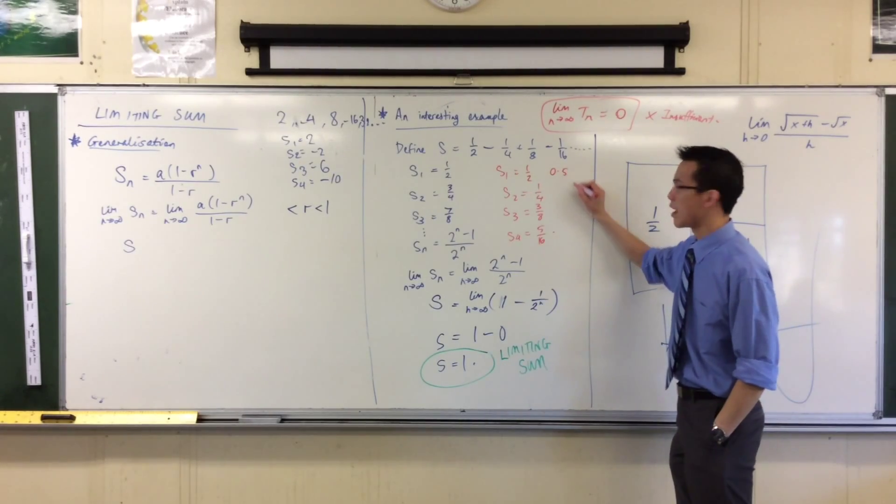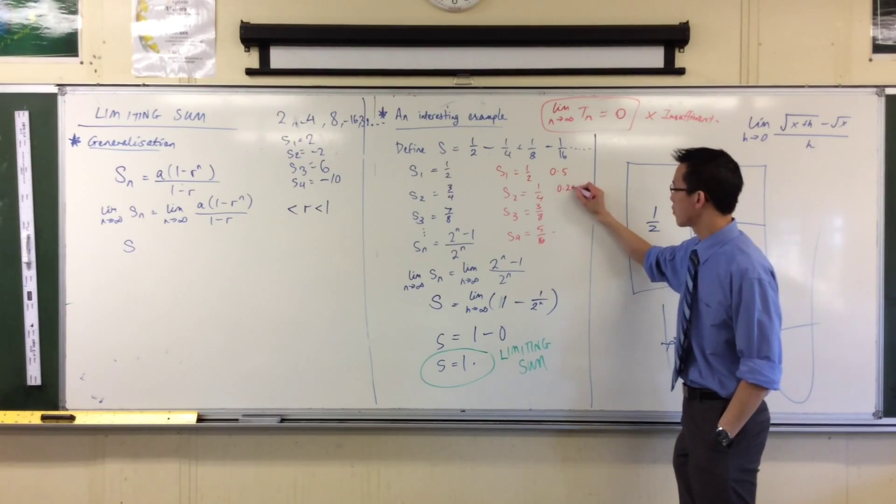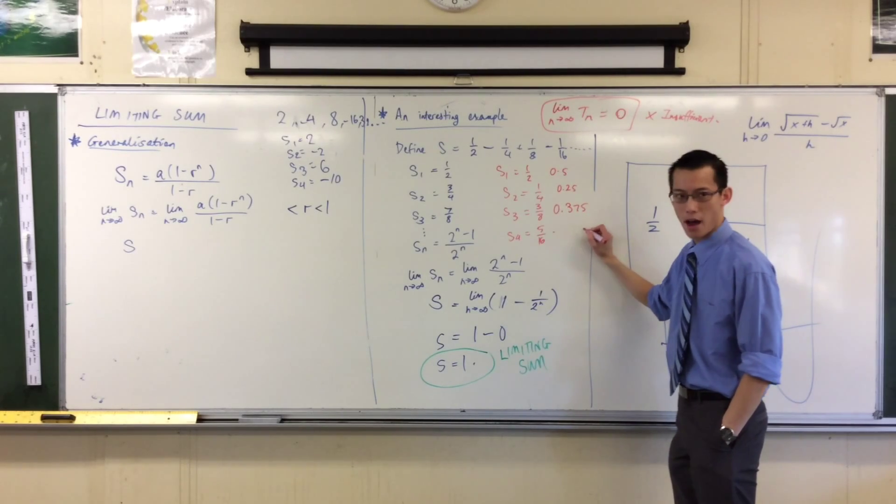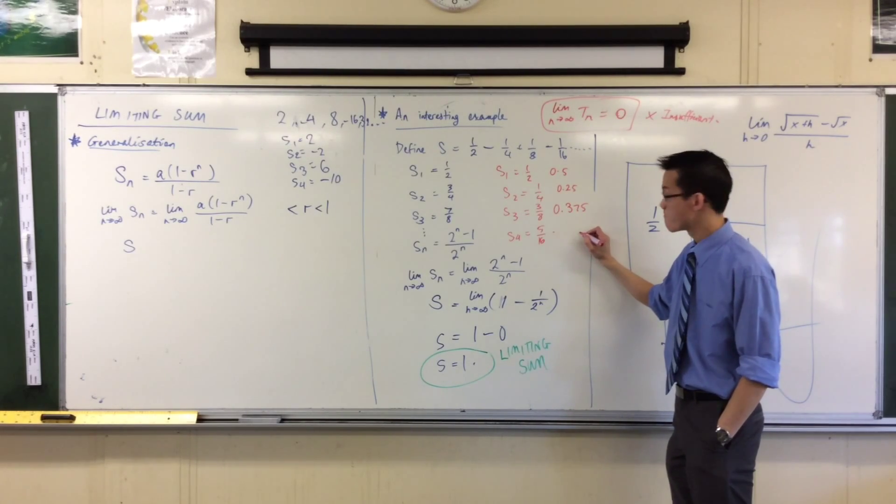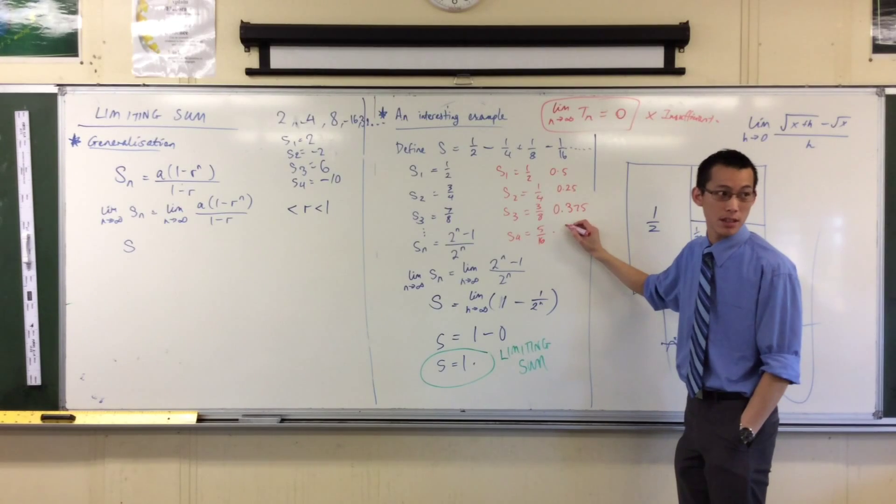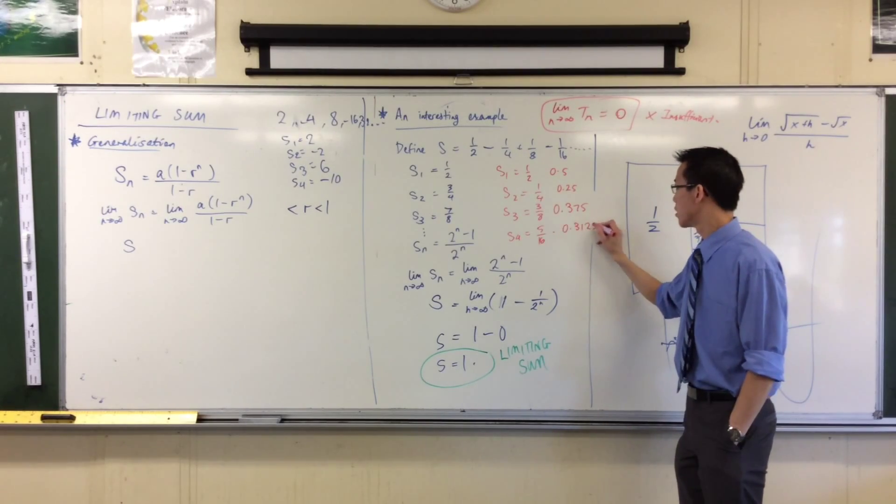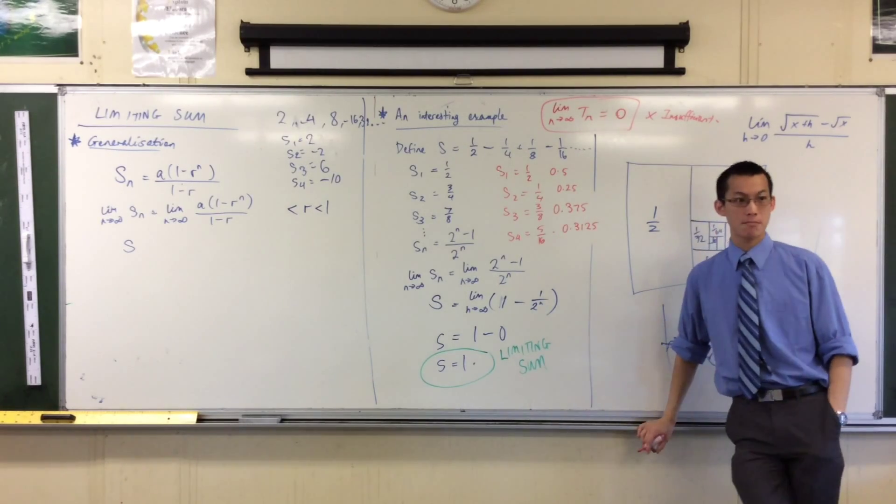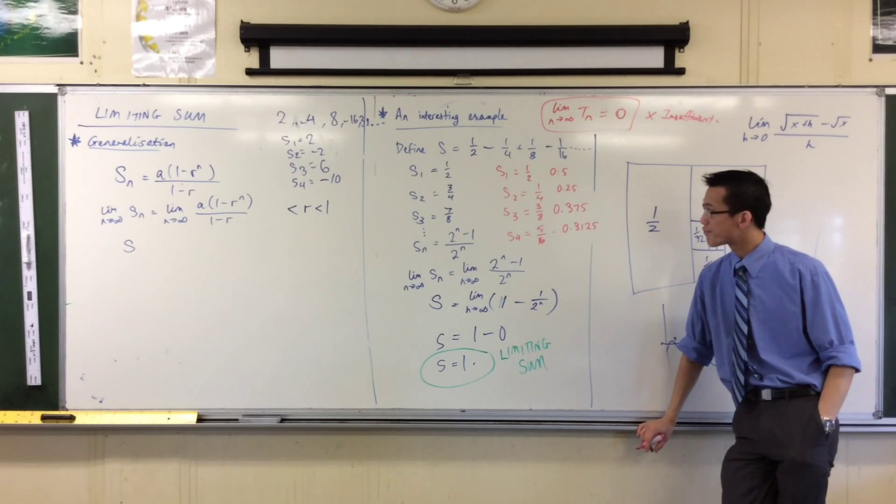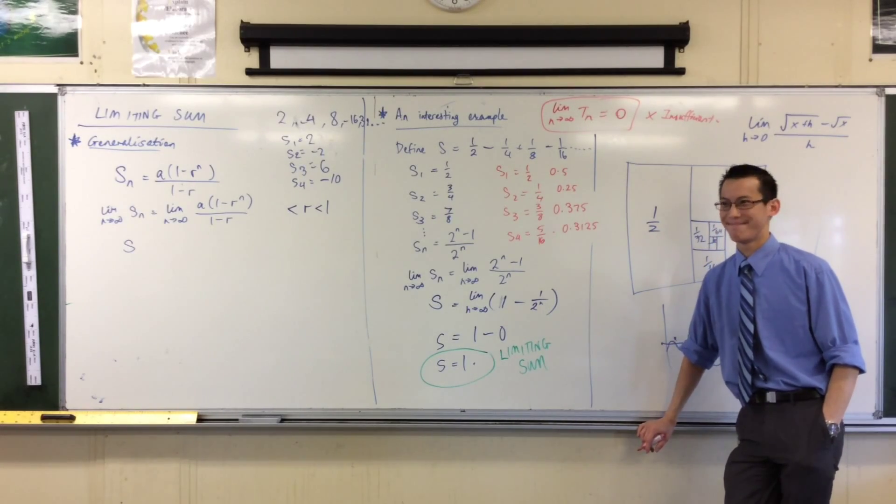Maybe if I do some decimals, that might help. Uh, this is 0.5. This is 0.25. This is 0.375. This is 0.375. What's five over six? I have no idea what this is. 0.3125. Converging.